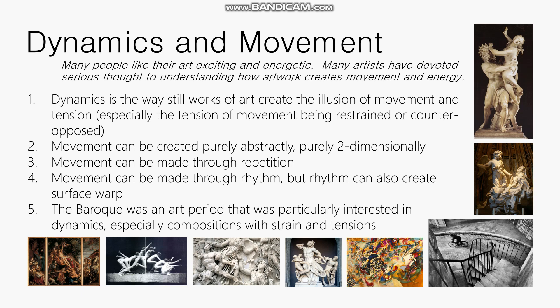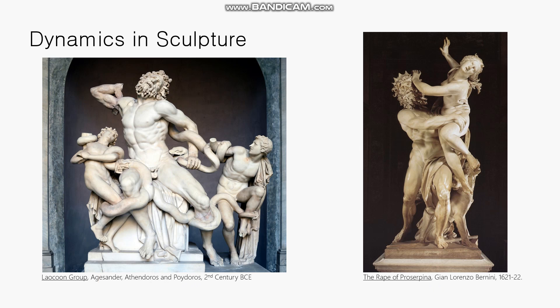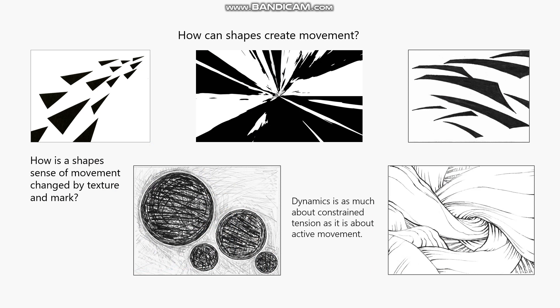Here are two classic examples: we already saw the Laocoon Group, a Hellenistic work of sculpture, and here is a Baroque work of sculpture by Bernini. In both cases, these are sculptures with multiple figures in an act of struggling — a semi-violent kind of pose. It's interesting that they're both slightly sensuous and violent at the same time, whether about Hellenistic Greeks or Baroque Europeans.